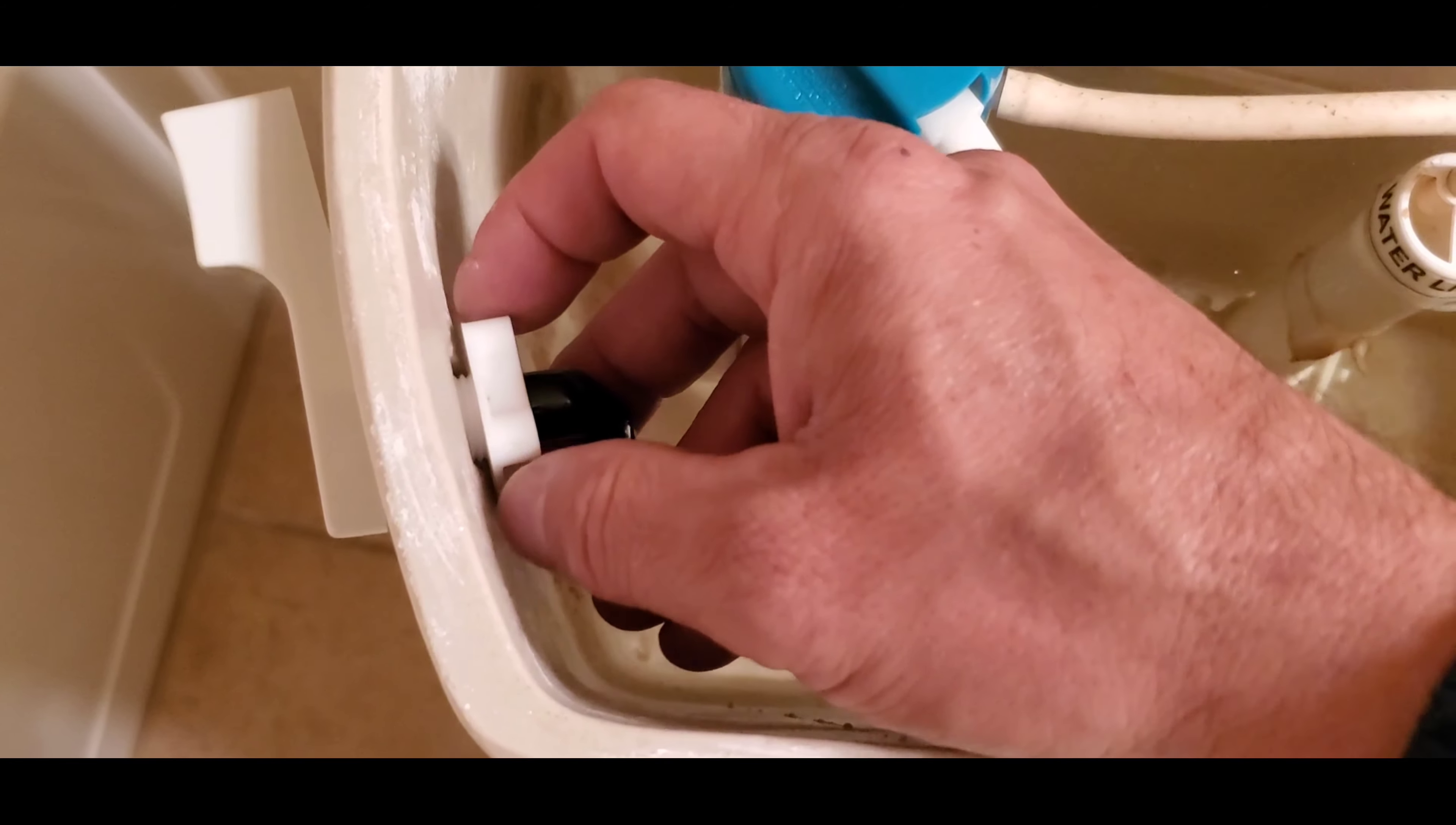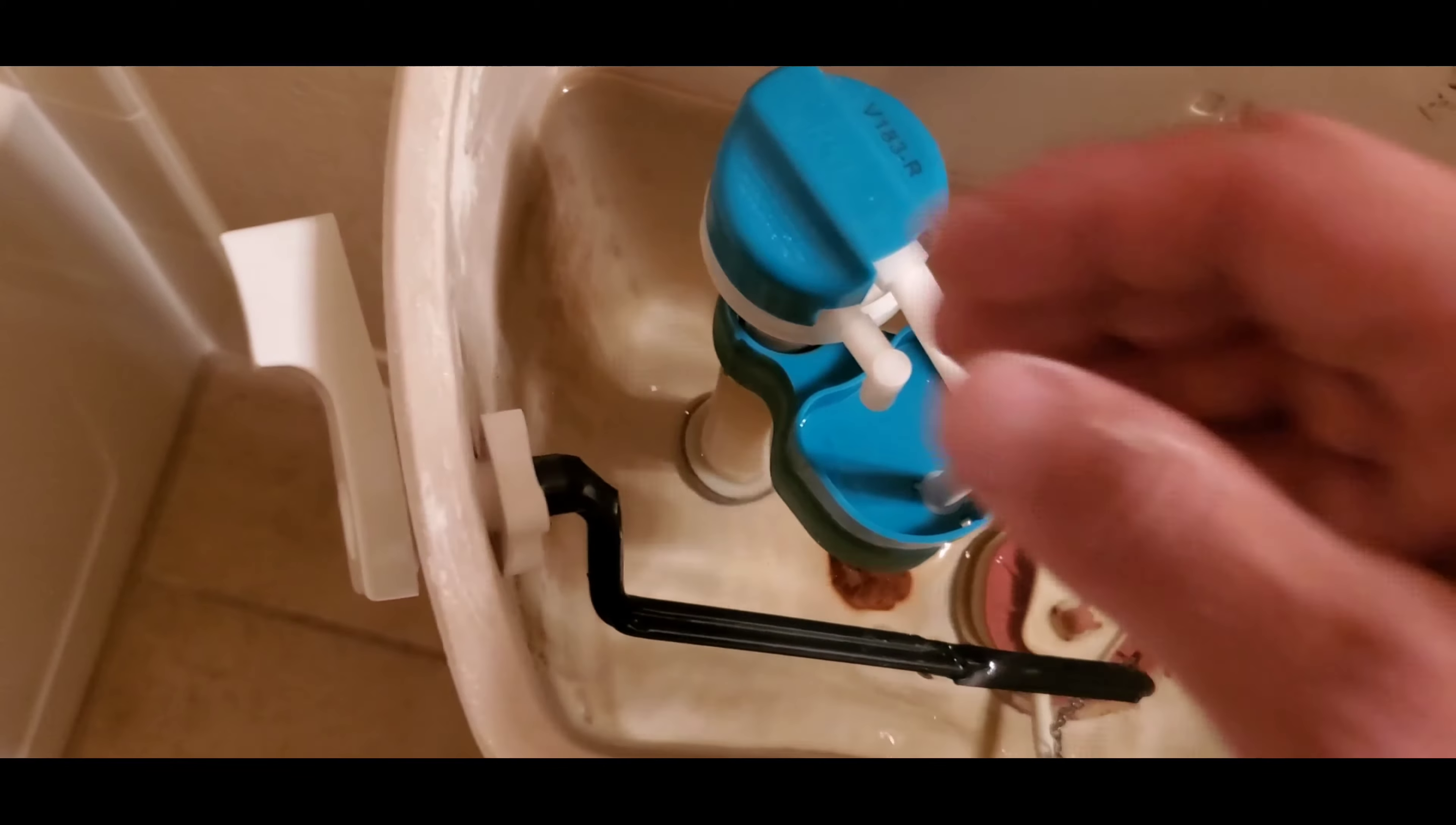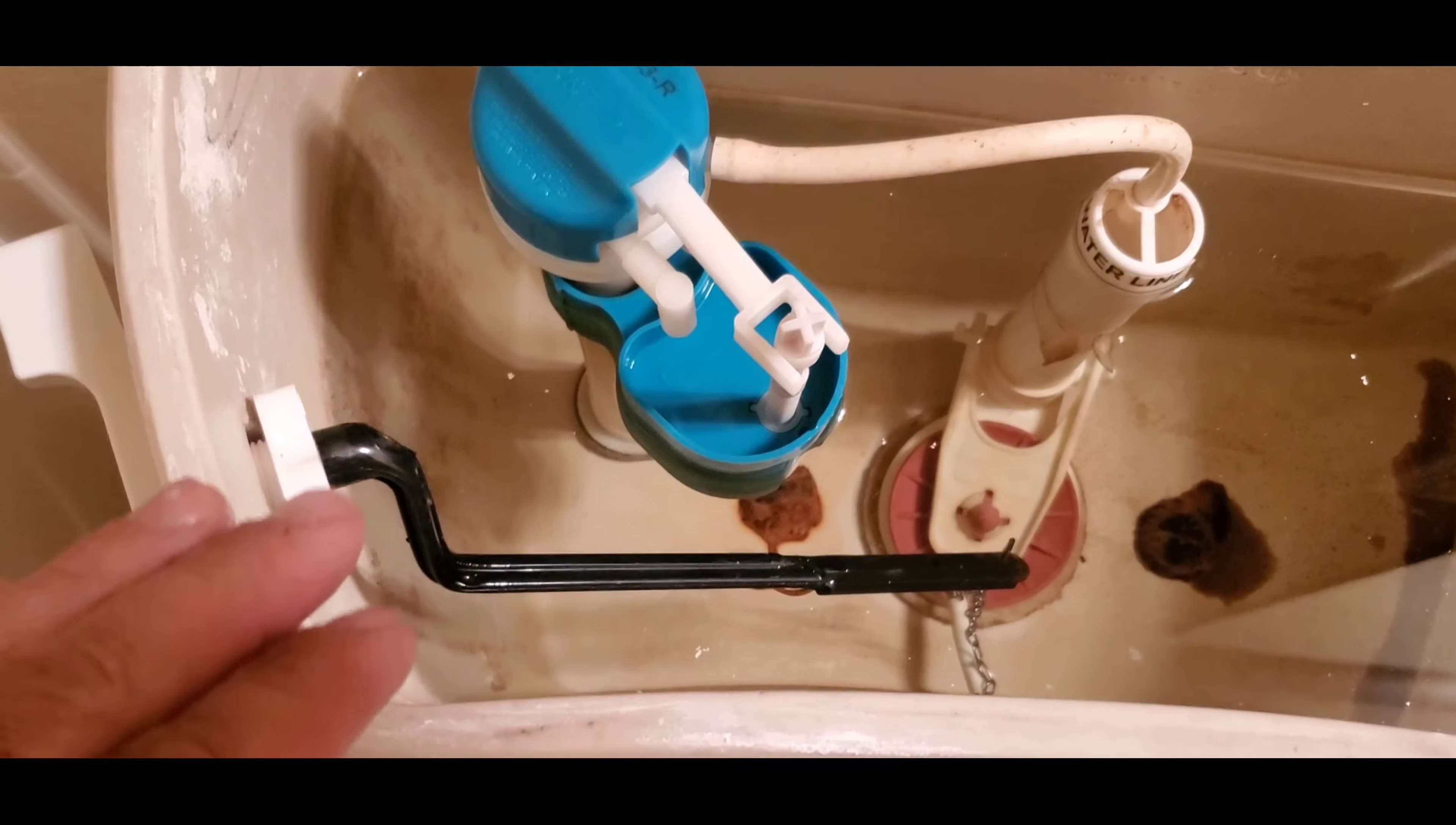Now looking at this, you see a nut that's threaded onto the flush handle and it just needs to be tightened. But the trick to this is it's actually reverse threaded.